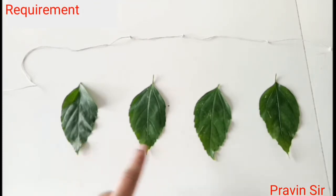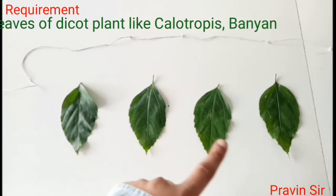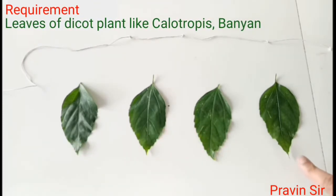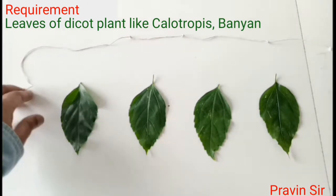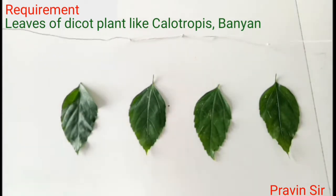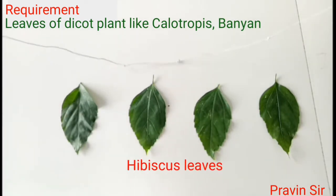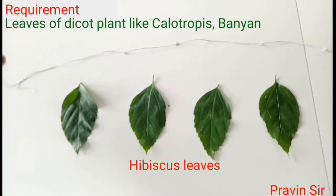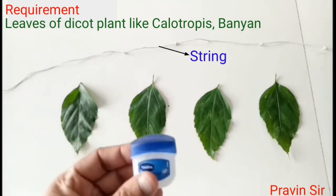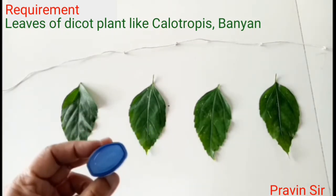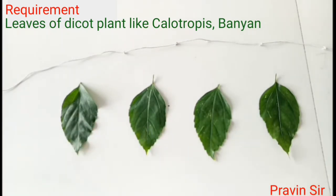Requirements: leaves of a dicot plant like Calotropis or banyan tree — I had taken a hibiscus leaf — string, vaseline, petroleum jelly, and a stand.